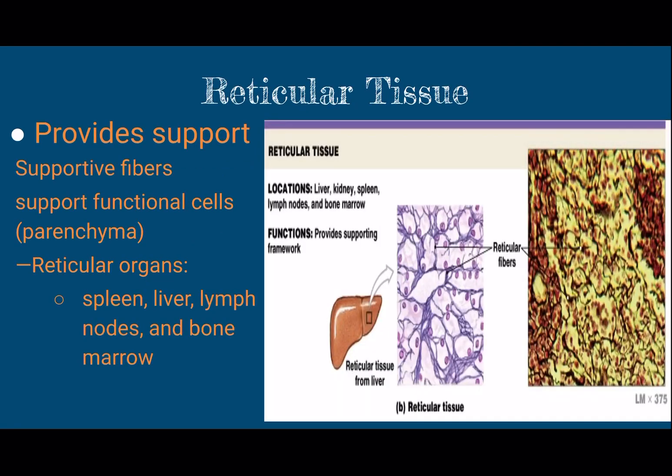The third type of loose connective tissue I mentioned is reticular tissue. Notice that it's found covering many of our organs. The reticular fibers are branched, and there's still quite a bit of space in the matrix to allow for movement of the organs. They're very supportive and important for those organs to have a covering around them.